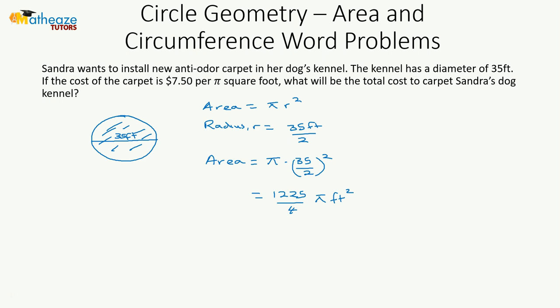What we're told here is that it's $7.50 per pi square foot. Let's do that here: pi square foot, 1 pi square foot is $7.50.